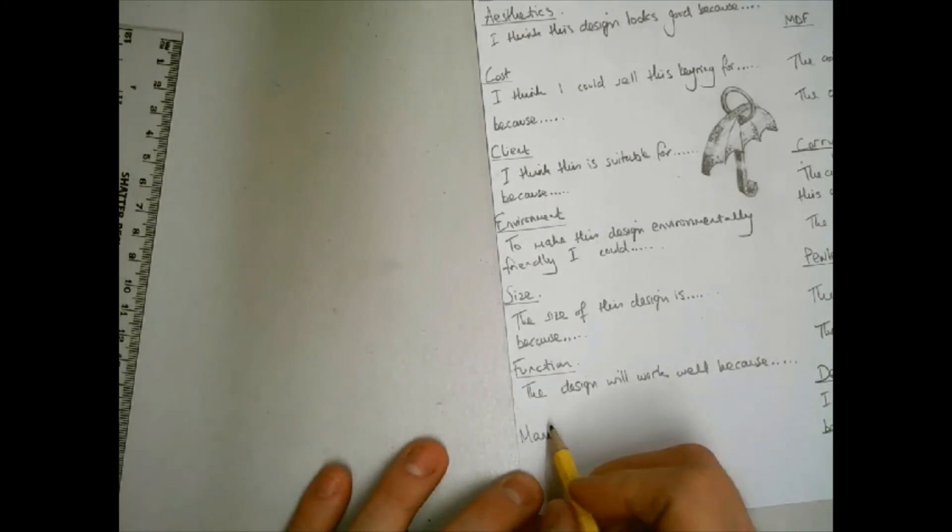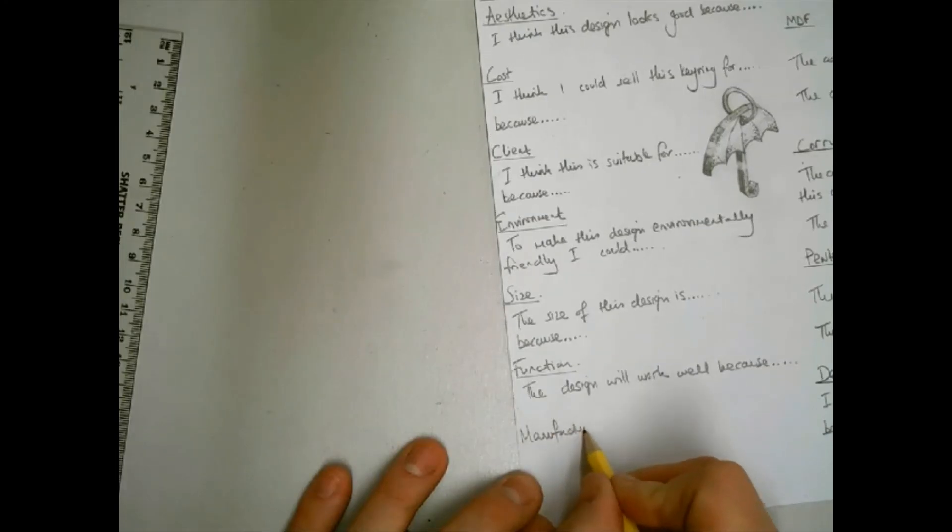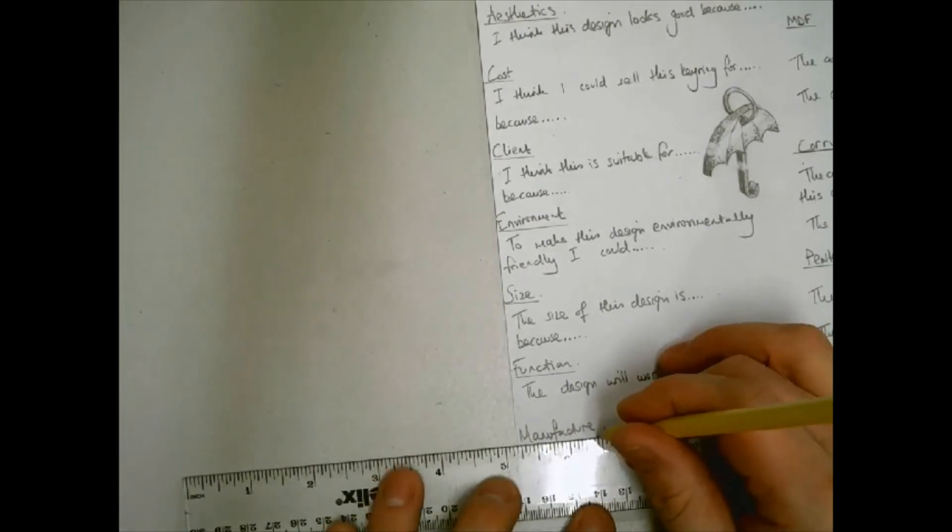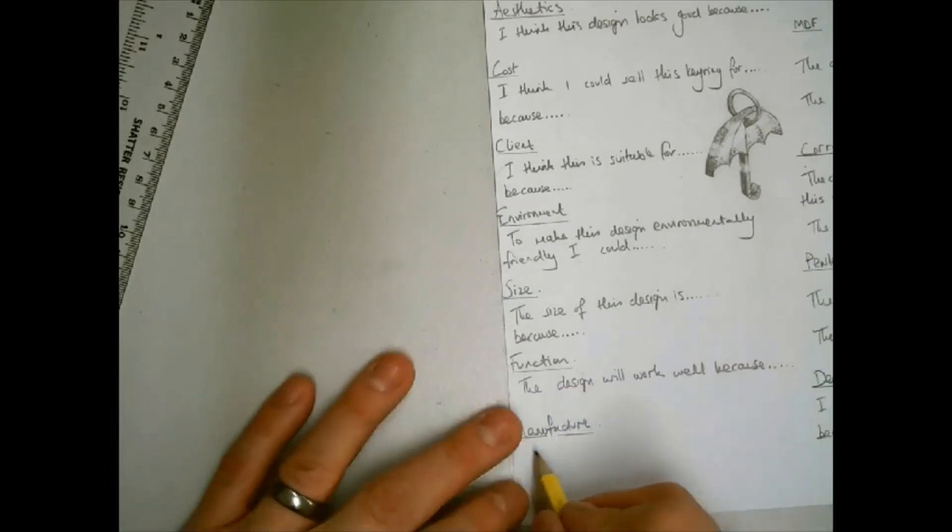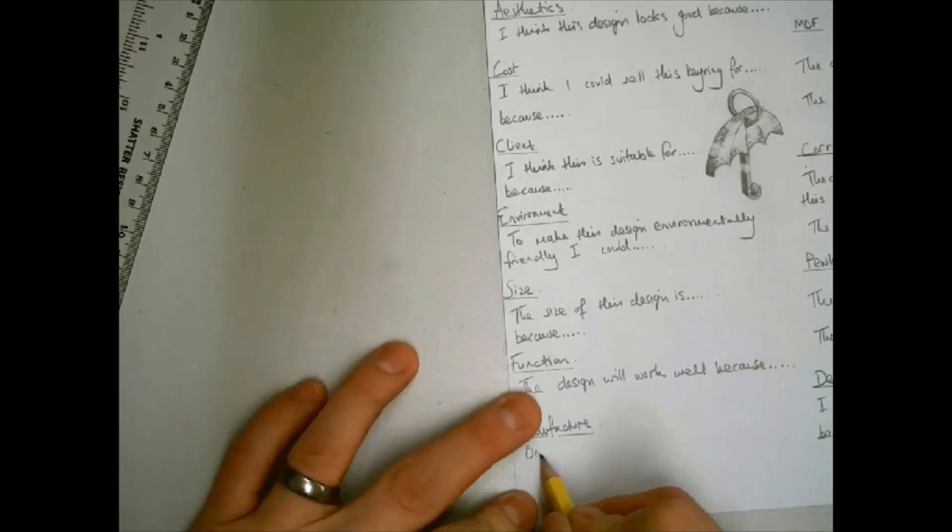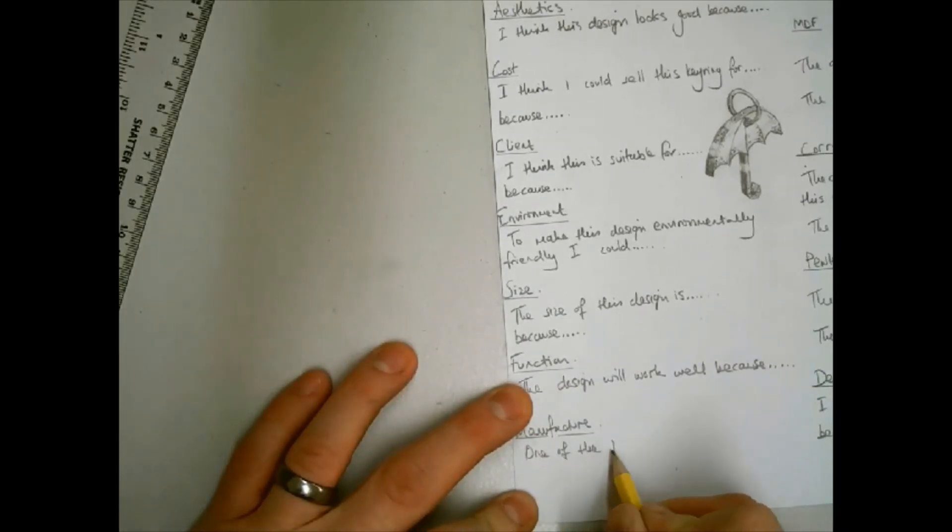The final letter is M. This stands for manufacture. The things to consider at this stage are how are you going to make the product? What tools you might use and why? How you might finish the product, i.e., with acrylic paint or spray paint?